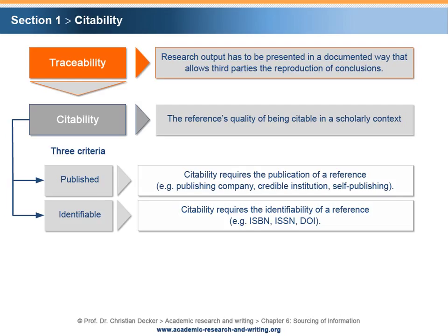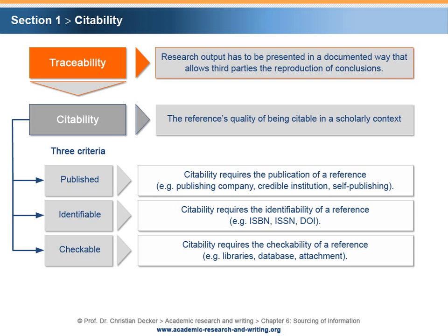Third, a reference is citable if it is checkable. Checking can take place by accessing the document in a library, in a database, or as an attachment. Libraries provide access to references in print and/or electronic form. Public or commercial databases provide access to references in print and/or electronic form. References can also be attached to research papers in print and/or electronic form.